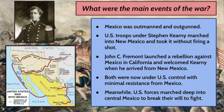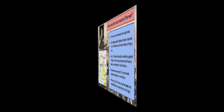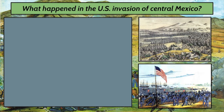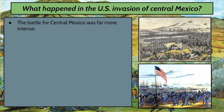However, forcing Mexico to surrender and give up those lands was going to involve invading deep into Mexico, which would prove to be much more challenging. The United States basically needed to break Mexico's will to fight in order to legitimize all of the territorial gains they had already made. The battle for Central Mexico was far more intense — Mexico was defending its heartland. New Mexico and California had very few Mexican citizens living there; they were sparsely populated and not administered heavily by Mexico.